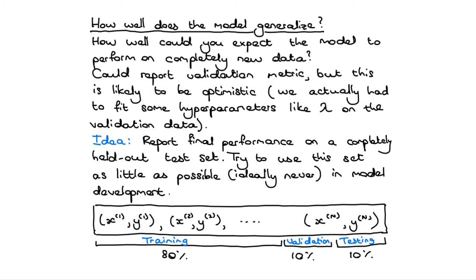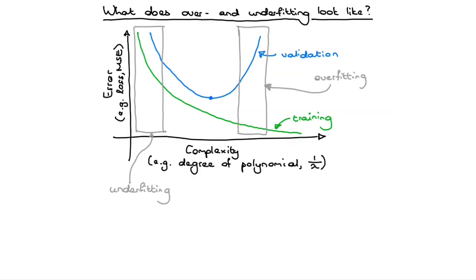You've never run anything on the test data; you've never even looked at it. It's very important in machine learning to follow this process, because otherwise you're essentially being dishonest and genuinely optimistic about the performance you report. This idea of using a validation set to decide how to pick your model is quite powerful — it's a simple idea, but a powerful one. And one nice thing it allows you to do is figure out whether your model is overfitting or underfitting.